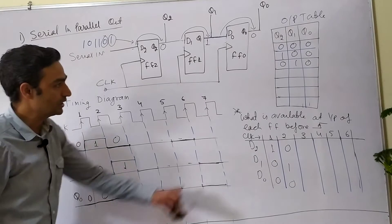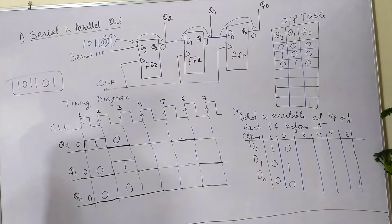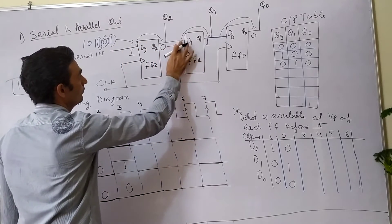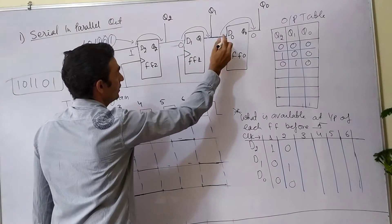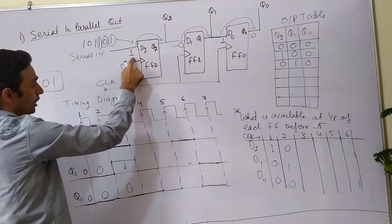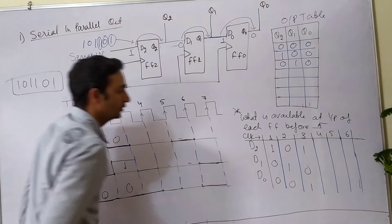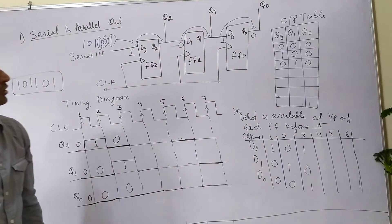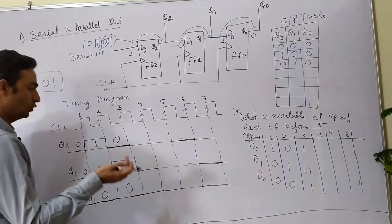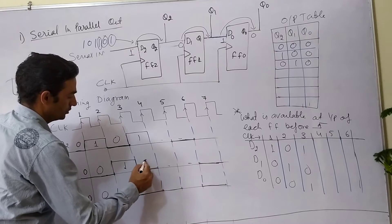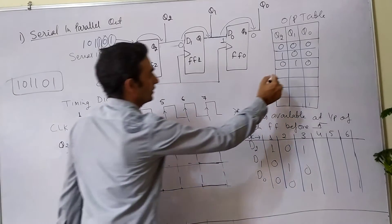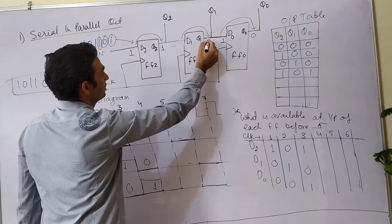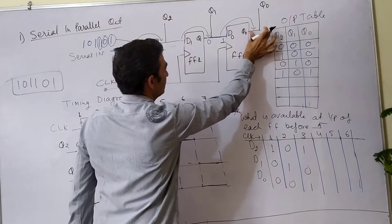Now the same question: what is available at the input of each flip-flop before the third clock edge? Before the third clock edge, D2=1, D1=0, D0=1. After the rising third clock edge, the output will be Q2=1, Q1=0, Q0=1, as the input data propagates to the output side.